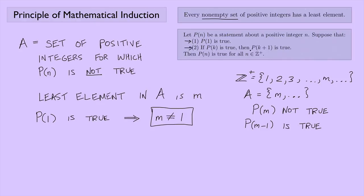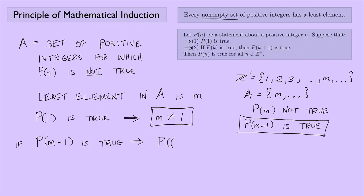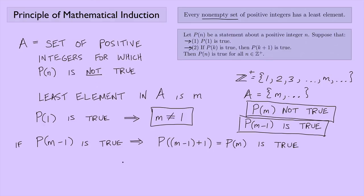Now for the second part: if P(k) is true, then P(k+1) is true. We know P(M−1) is true, so that implies P(M−1+1) is true — which is just P(M). But wait, we said P(M) is not true. That's a contradiction! So A must not have anything in it at all. A is the empty set, which means P(n) is true for all positive integers.